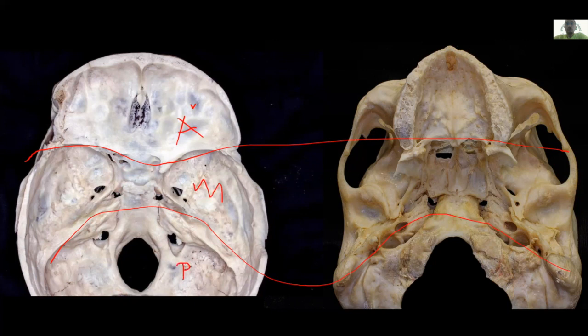The border between the anterior and middle fossa is the sphenoid ridge, joining medially the chiasmatic sulcus and the anterior clinoid. The border between the middle and posterior fossa is the petrous ridge. Both surfaces are interconnected through foramina and fissures.